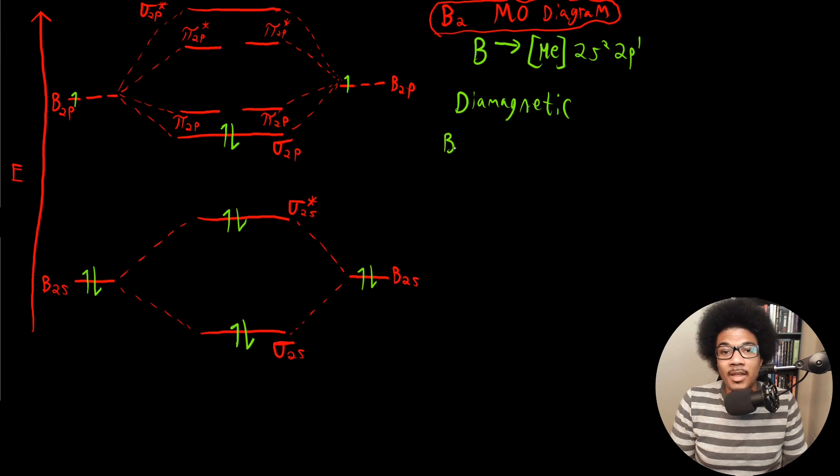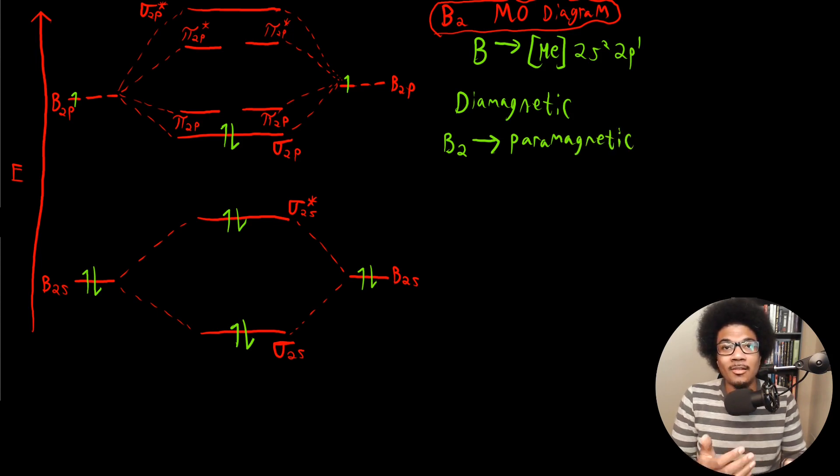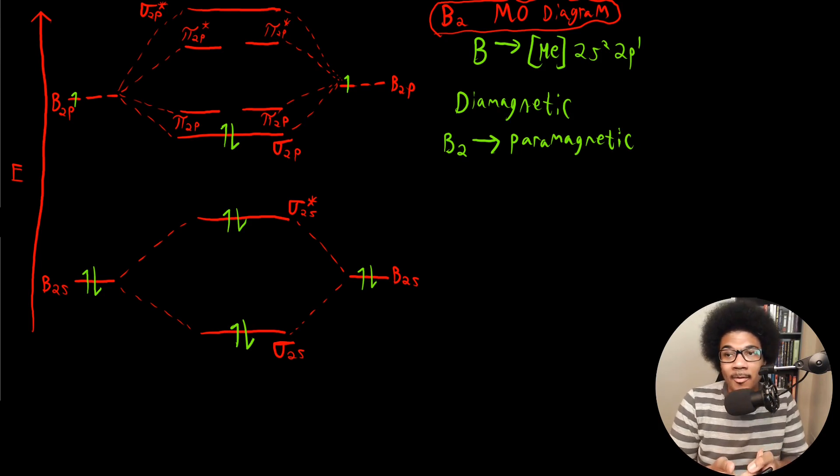Except there's one problem here. Experimental evidence shows that B2 is actually a paramagnetic material. So B2 is known to be paramagnetic. It's known to attract or to be affected by an applied magnetic field. So what gives? What's wrong with our MO diagram model?